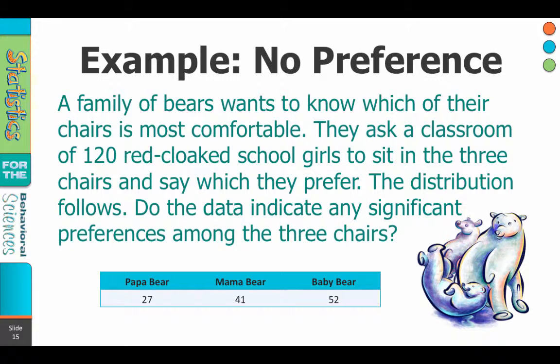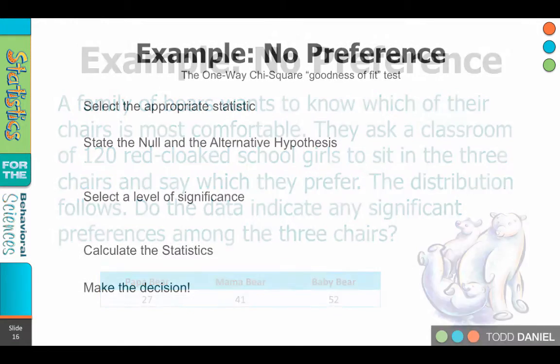So what we find is that Papa Bear's chair was chosen as most comfortable 27 times, Mama Bear's chair was chosen 41 times, and Baby Bear's chair was chosen 52 times. Let's run a chi-square on these data and find out what we learn.